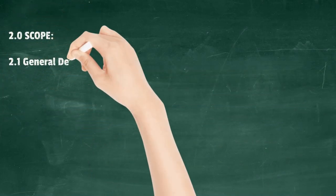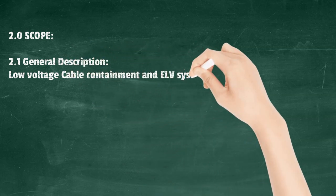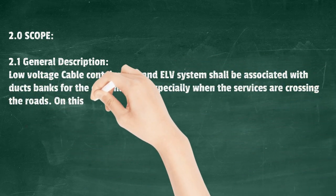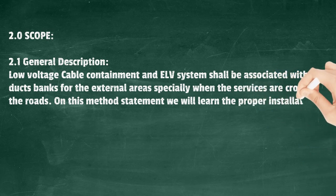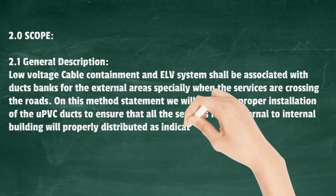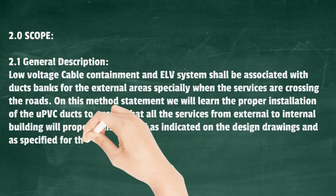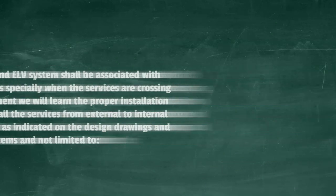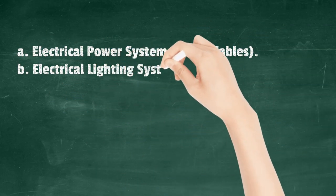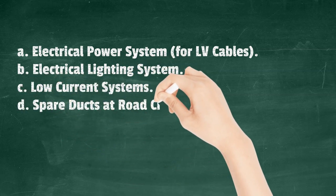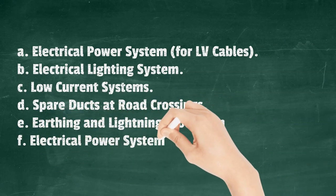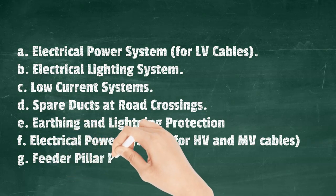Scope - General Description: Low-voltage cable containment and ELV systems shall be associated with duct banks for external areas, especially when services are crossing roads. This method statement covers proper installation of UPVC ducts to ensure all services are properly distributed as indicated on design drawings, including: electrical power system for LV cables, electrical lighting system, low-current systems, spare ducts at road crossings, earthing and lightning protection, electrical power system for HV and MV cables, feeder pillar panels, and landscape lighting panels.